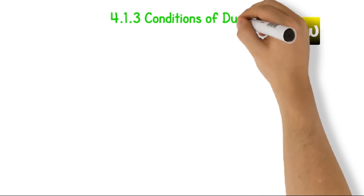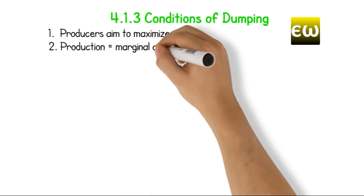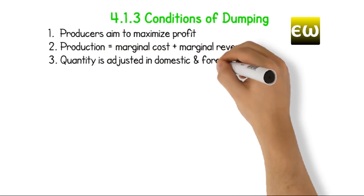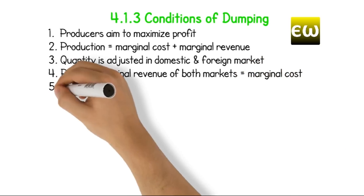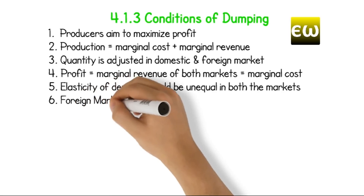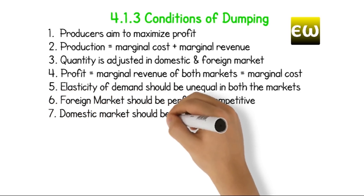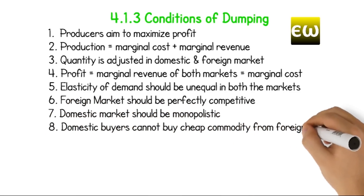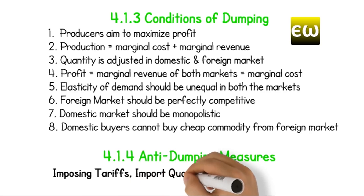Conditions of dumping: 1. Producers aim to maximize profit. 2. Production equals marginal cost plus marginal revenue. 3. Quantity is adjusted in domestic and foreign markets. 4. Profit equals the marginal revenue of both markets, which equals marginal cost. 5. Elasticity of demand should be unequal in both markets. 6. Foreign market should be perfectly competitive. 7. Domestic market should be monopolistic. 8. Domestic buyers cannot buy cheap commodities from the foreign market. Anti-dumping measures: imposing tariffs, import quota, and import embargo.